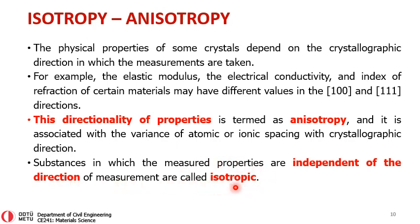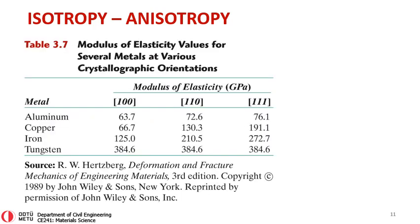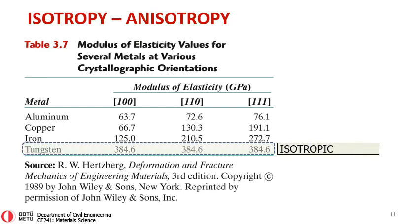Substances in which measured properties are independent of the direction of measurement are called isotropic materials. So for an isotropic material, if you test it in this direction, that direction, or any other direction, all the properties will be the same — it will not depend on the direction of measurement.